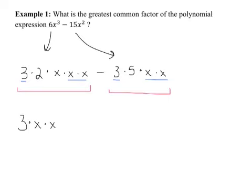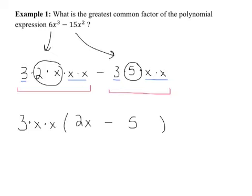You write 3 times x times x as your greatest common factor out front, then ask what's left over. We carry down the negative sign — that continues to carry down. We're left with this expression, which simplifies to 3x² times the quantity 2x minus 5.